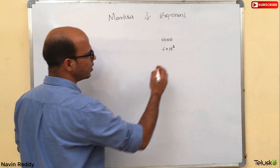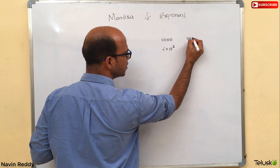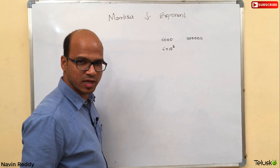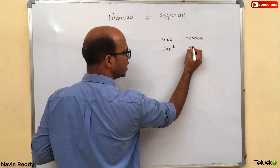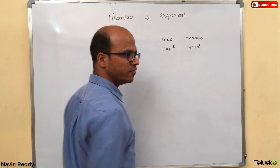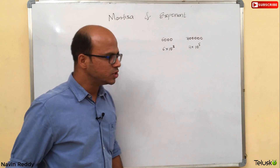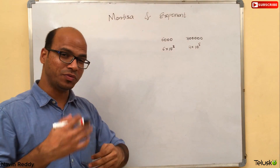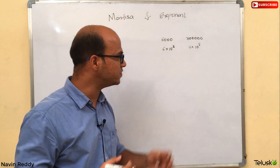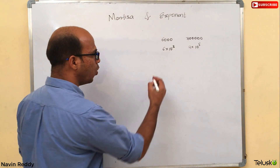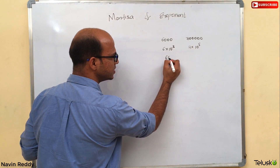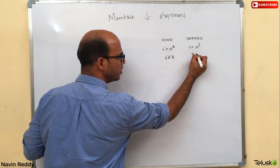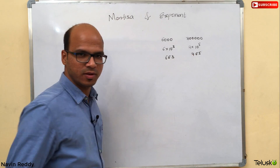If you have a bigger number like 700,000, which has five zeros, it will be 7 into 10 raised to 5. So instead of saying 6 into 10 raised to 3, or 7 into 10 raised to 5, we can say 6E3 and 7E5.